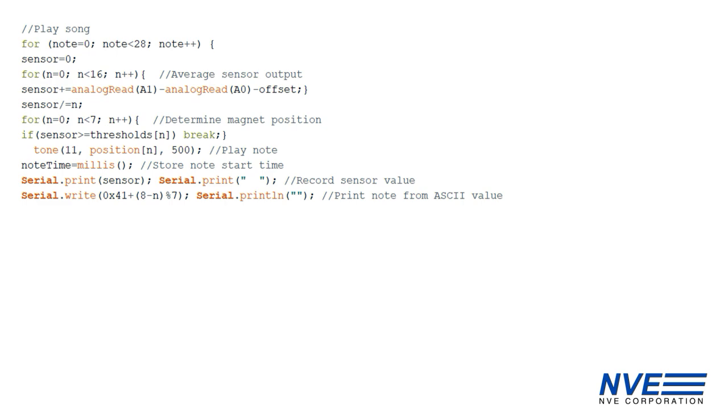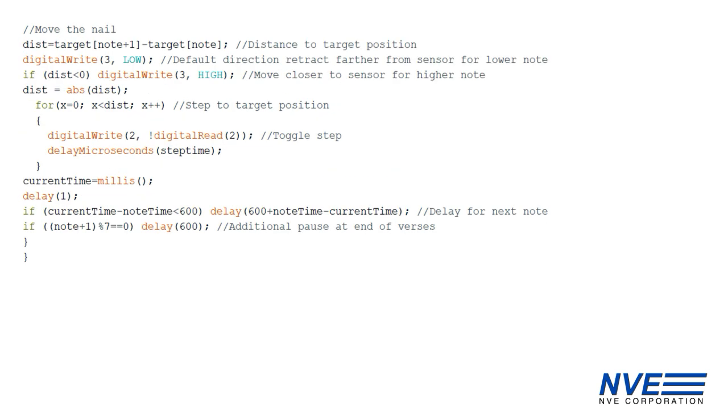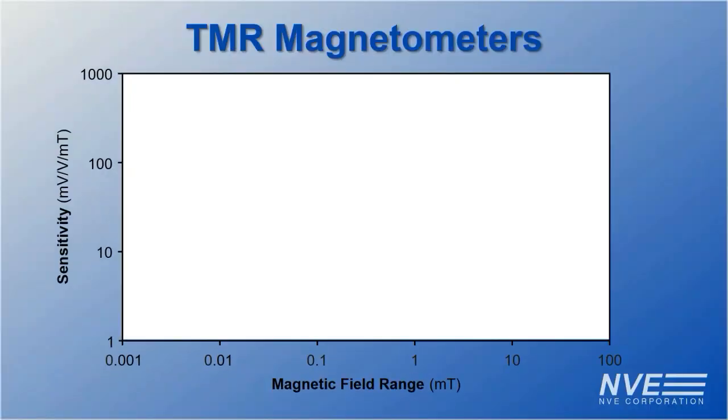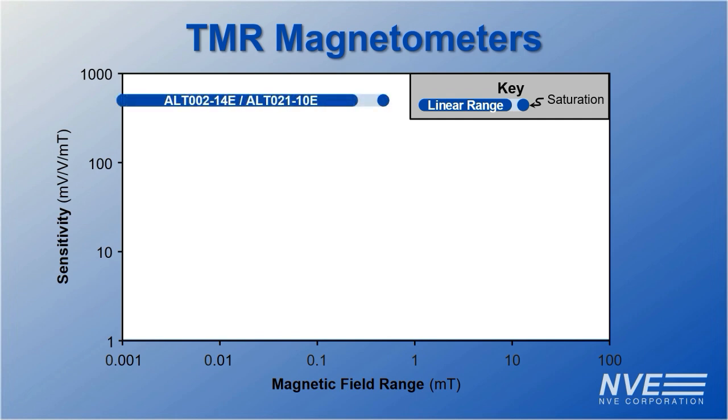The Arduino averages a number of sensor samples, then plays a note corresponding to the magnetic field at its position. Then it moves the nail to the next position.